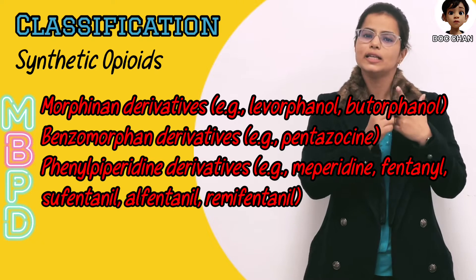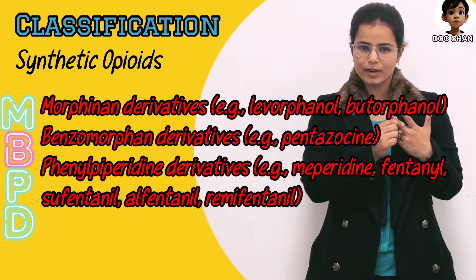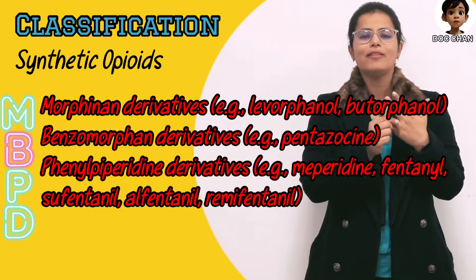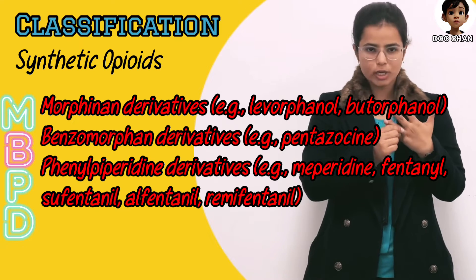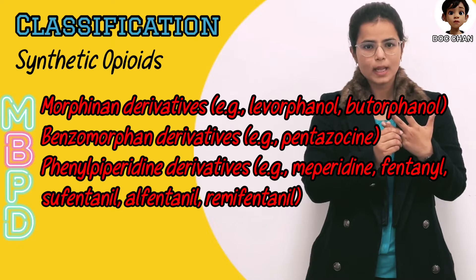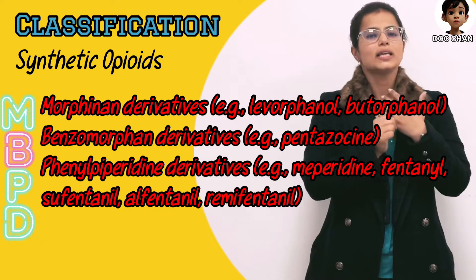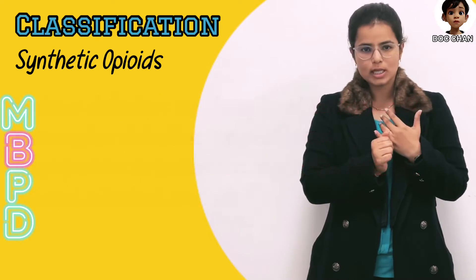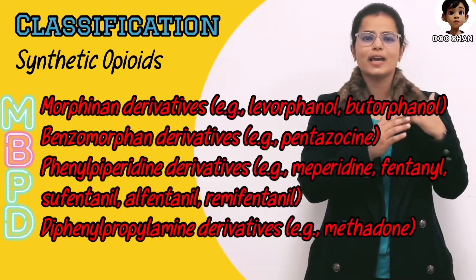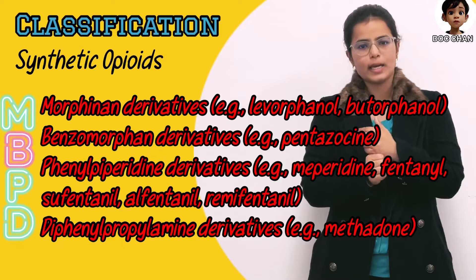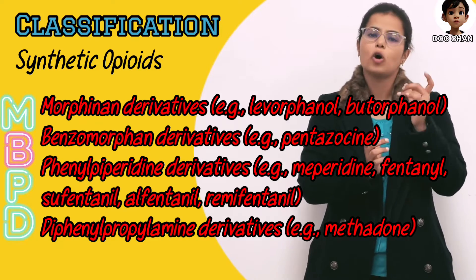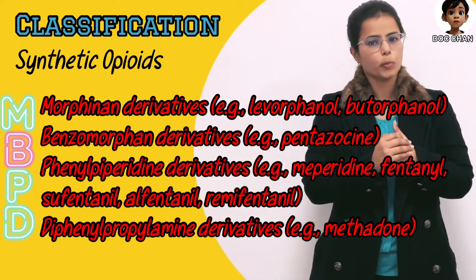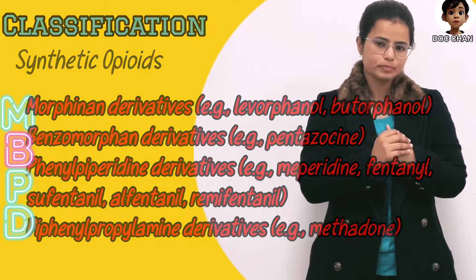Sufentanyl decreases airway reflexes. Alfentanyl causes wooden chest syndrome. Remifentanyl is metabolized by RBC esterases. Next is diphenylpropylamine, that is methadone. Methadone is the longest acting opioid known.